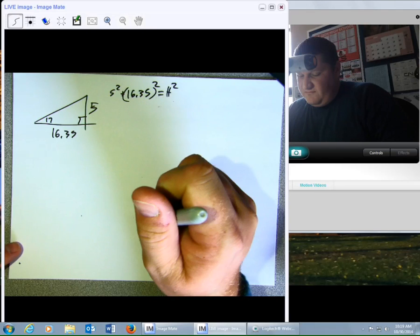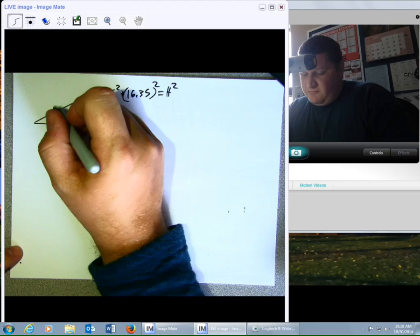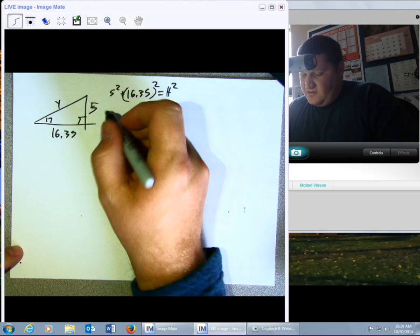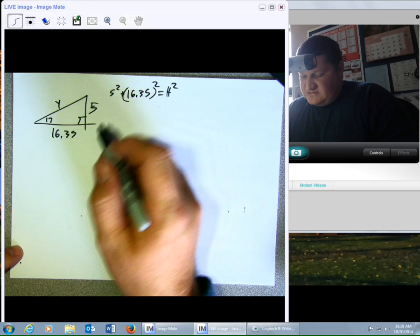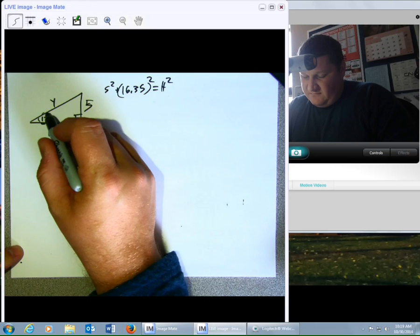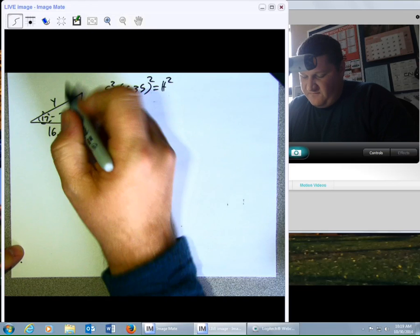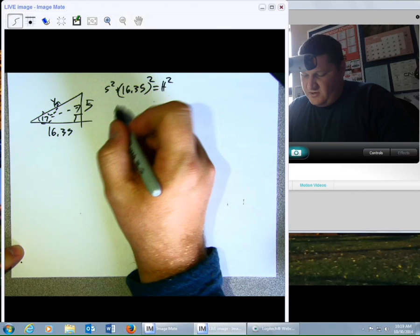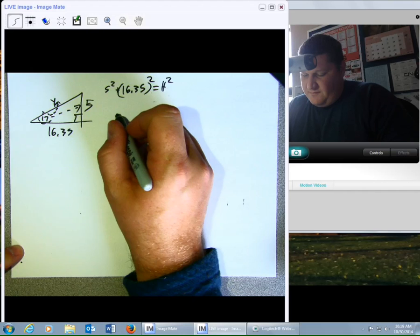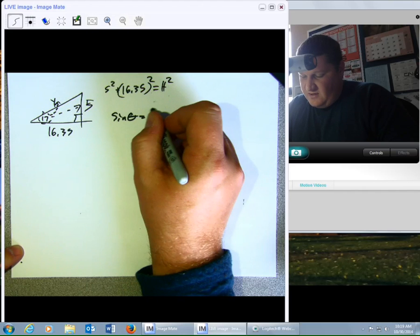I would be way better just to try to find angle Y by using a different formula. In this case, I have 17. I have 5. I need to know Y. So, I have opposite. I want to know hypotenuse. Opposite and hypotenuse is sine of theta, opposite over hypotenuse.